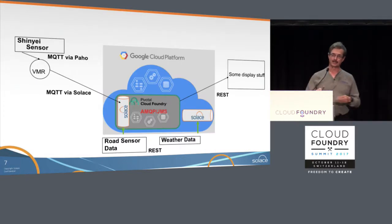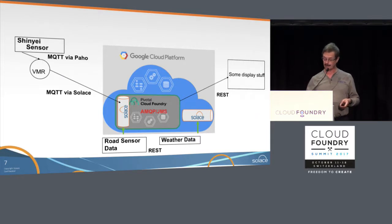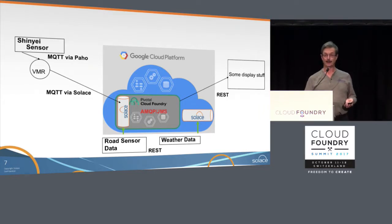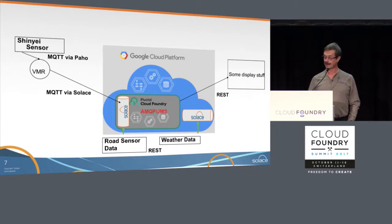My sensor is now feeding MQTT data — message queuing telemetry tracking — into the VMR. I wanted to feed that MQTT data into Cloud Foundry, along with road data and weather data, then put something out viewable on a phone or browser. MQTT data on one side, REST data going in, REST data coming out. Access to a public cloud via Cloud Foundry has some challenges if it's not HTTP, but fortunately there are solutions — one of which I'll talk about.